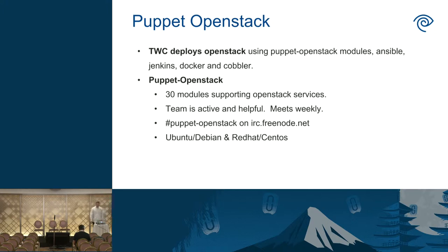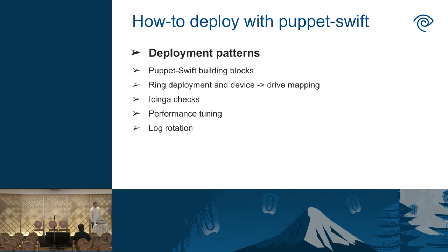When I began looking at the Puppet Swift module, I found that a lot of the examples are really generic and there was no real guidance on how to piece it all together. Because Swift is so flexible and can fit so many different applications, this talk is really supposed to be a blueprint for how you would piece together Swift, and also some supporting services on those nodes to monitor your Swift and make sure it's operating correctly.